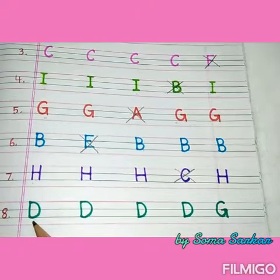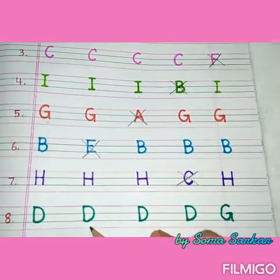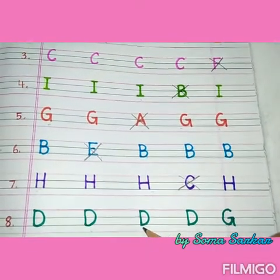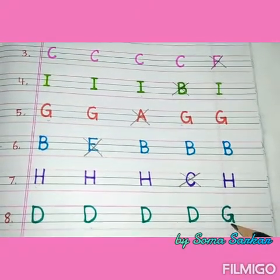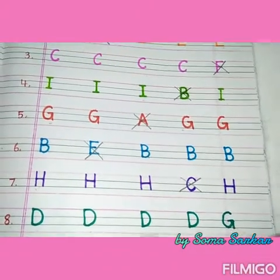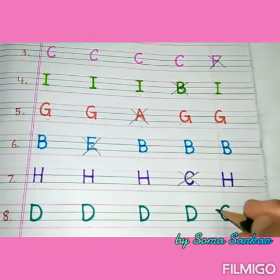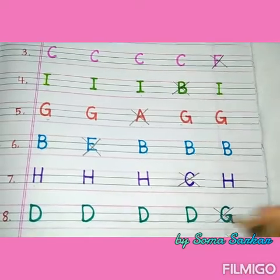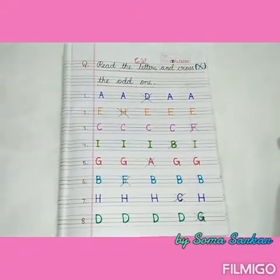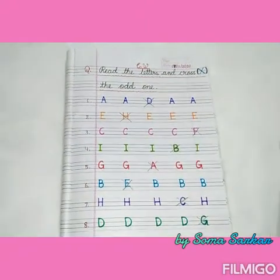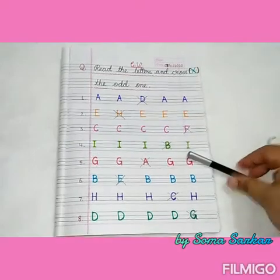Now read the last line. What is this? Yes, this is capital letter D. This is also D, this is also D, this is D. And this one? Yes, this is capital letter G. So these all are same — who is odd? Yes, G is odd. So cross the odd letter. So kids, this is your class work. Play this game in your English notebook. Have fun. That's all for today. Thanks for watching. Bye-bye.